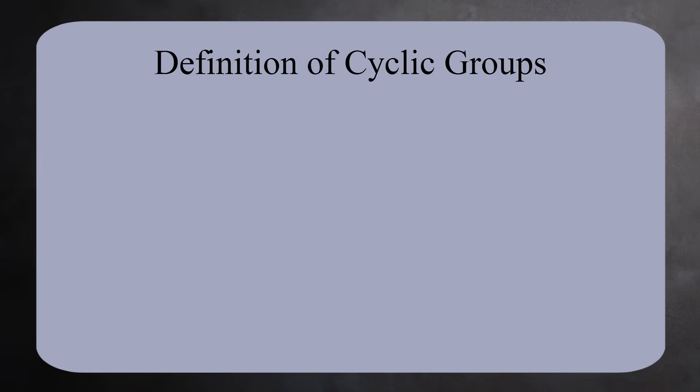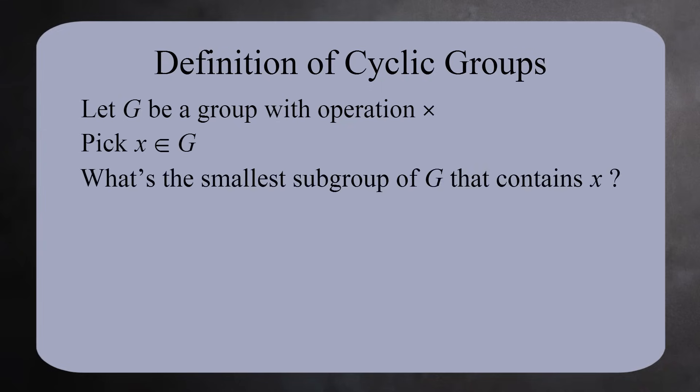Let's now dive into the definition of cyclic groups. Let G be any group, and pick an element X in G. Here's a puzzle. What's the smallest subgroup of G that contains X?